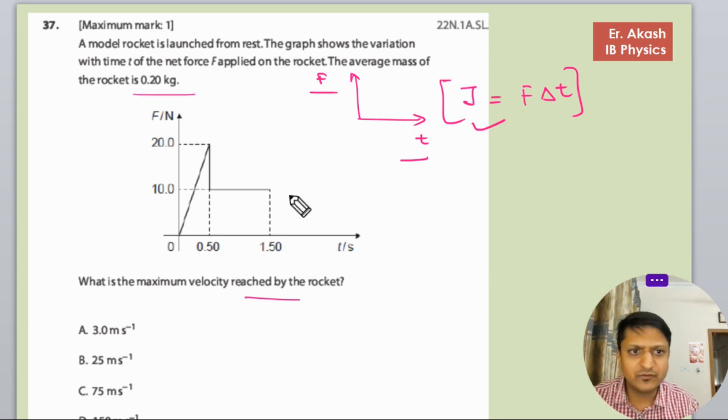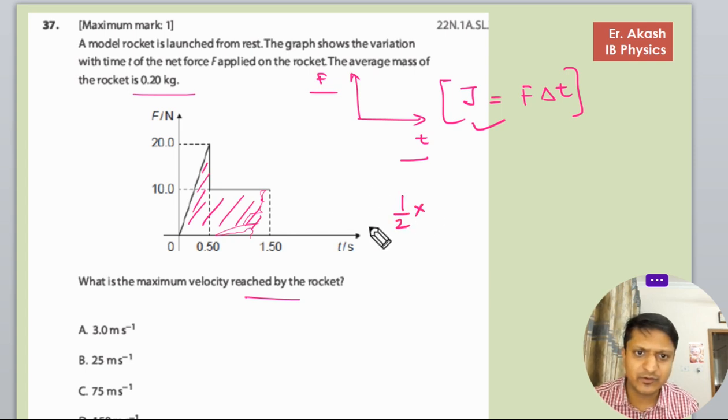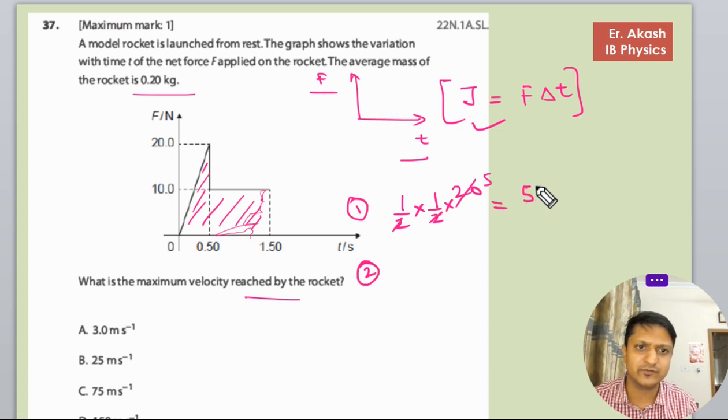First of all, we will calculate the area under the graph. There will be two areas. One triangle, that is half into, this is one-half into 20. Okay, the first area. And the second area we will calculate. This is 2 into, 2 to 4, so 0.5 to 2.0, so it is 5. And then this rectangle we will calculate.